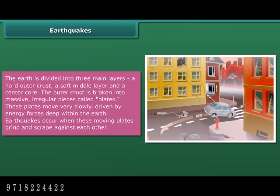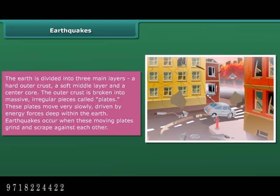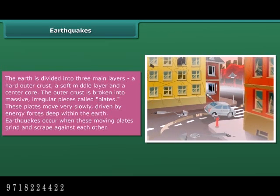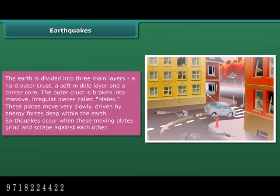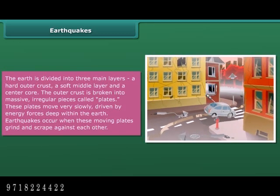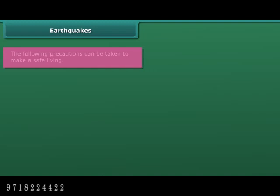The earth is divided into three main layers: a hard outer crust, a soft middle layer, and a center core. The outer crust is broken into massive, irregular pieces called plates. These plates move slowly, driven by energy forces deep within the earth. Earthquakes occur when these moving plates grind and scrape against each other.